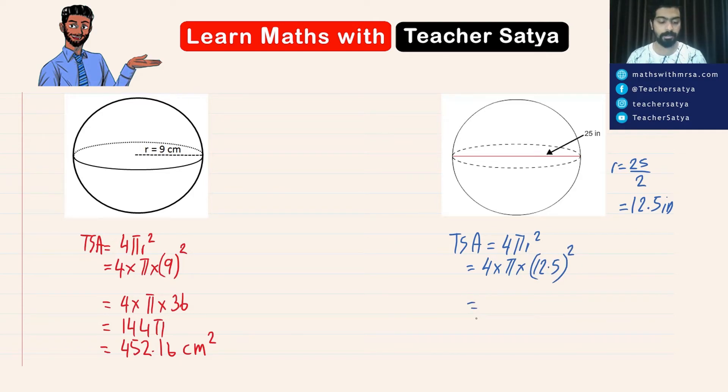Now if we take 12.5 to the power of 2 we would have 156.25, so 4 multiplied by π multiplied by 156.25, and we take this multiplied by 4. We should have equal to 625π.